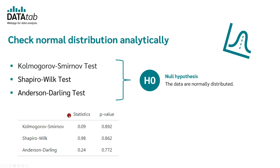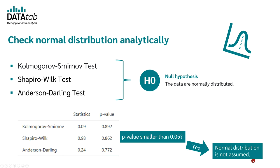Now, the big question is whether this p-value is greater or less than 0.05. If the p-value is less than 0.05, this is interpreted as a significant deviation from the normal distribution. And you can assume that your data are not normally distributed.